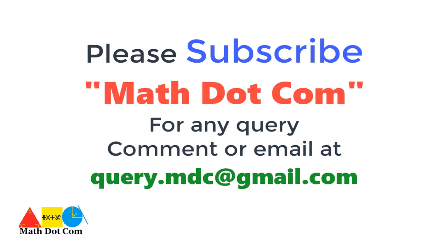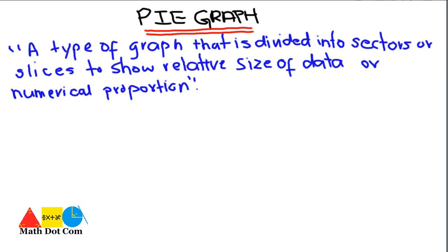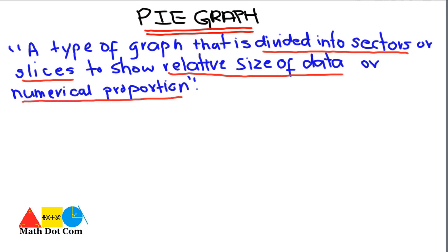Hello everyone. Our today's topic is pie graphs, which is used in information handling in order to represent data in a manner that you can easily evaluate useful information visually. A pie graph is defined as a graph that is divided into sectors or slices to show relative size of data or numerical proportion. No need to worry about these terms as we will discuss them with the help of an example.